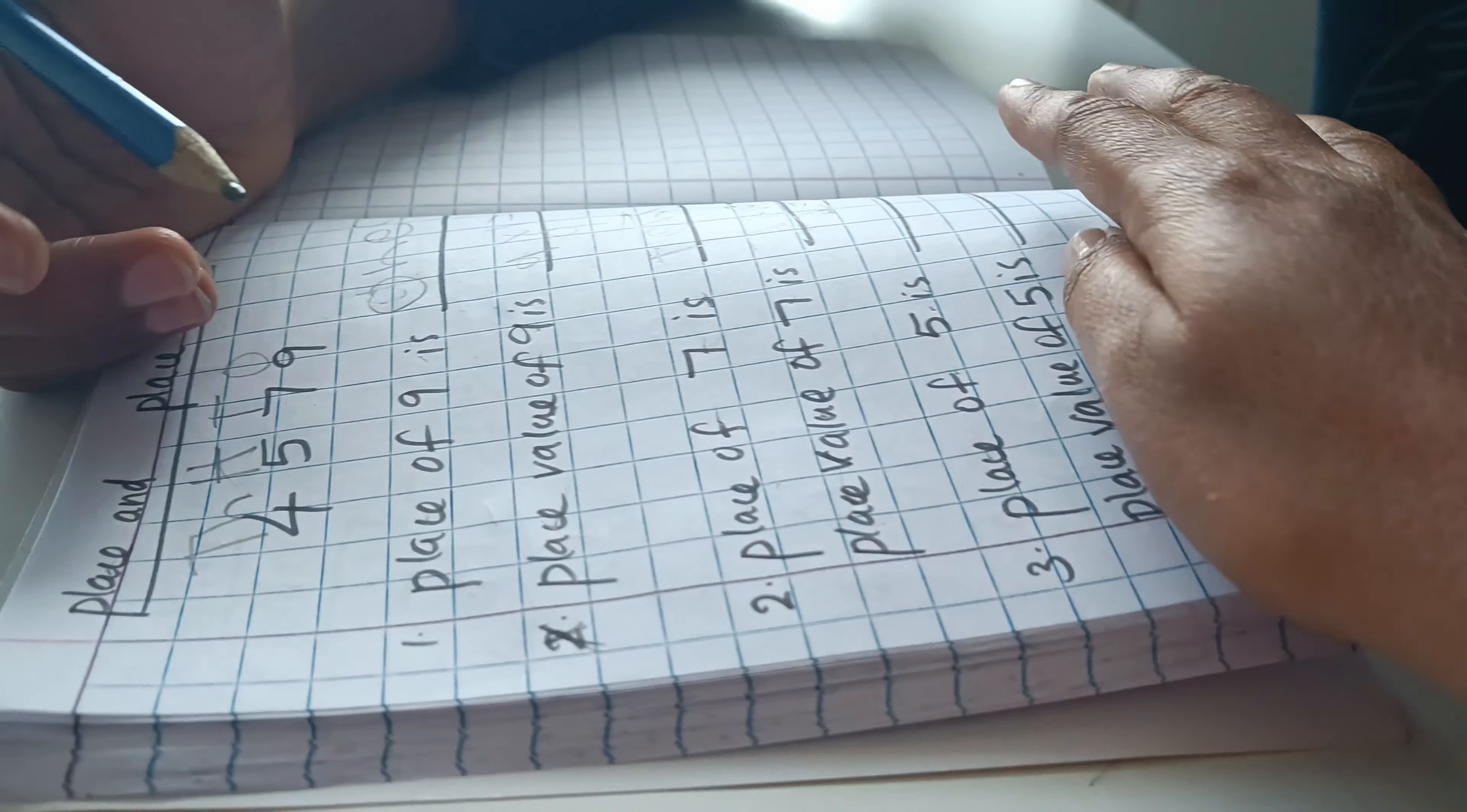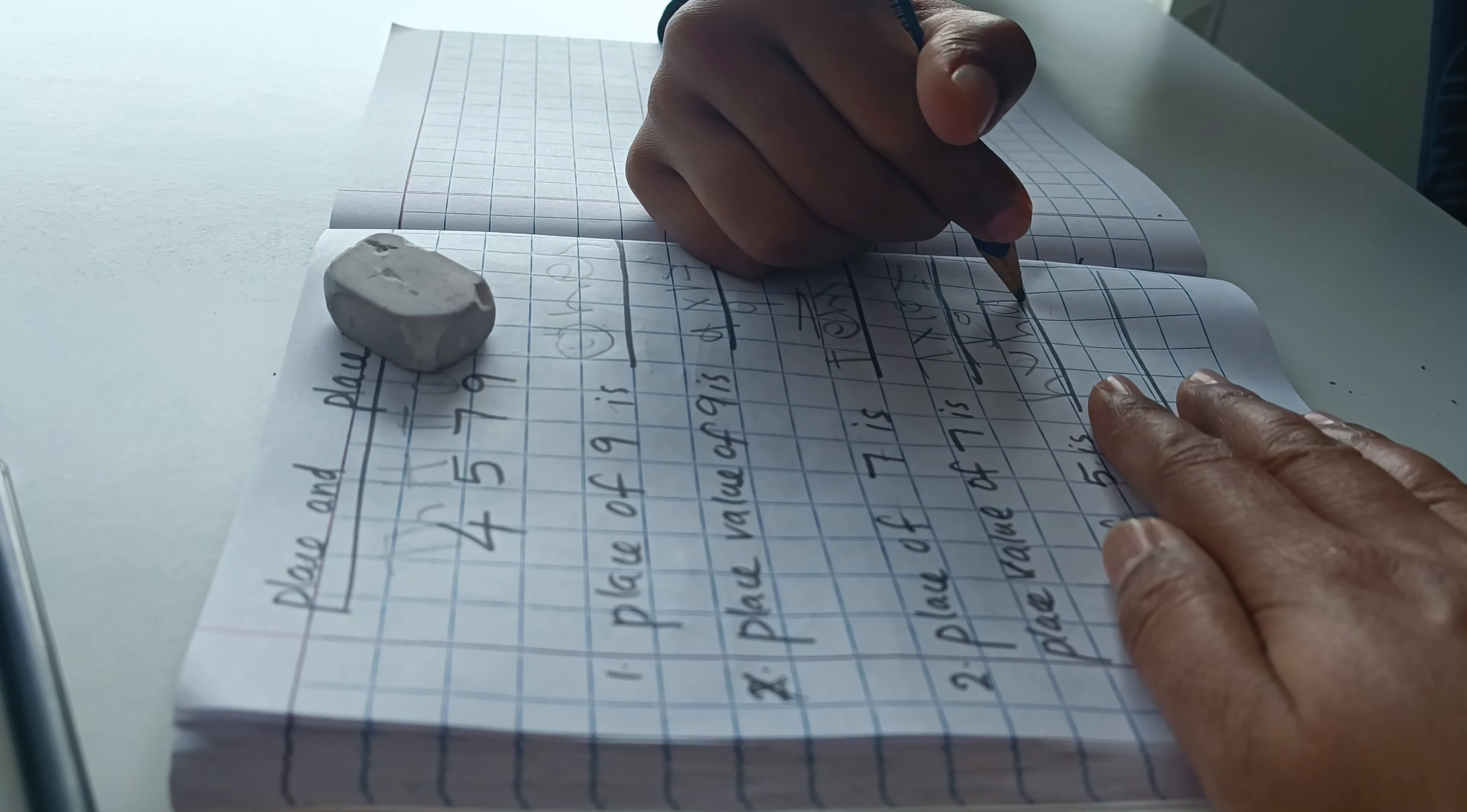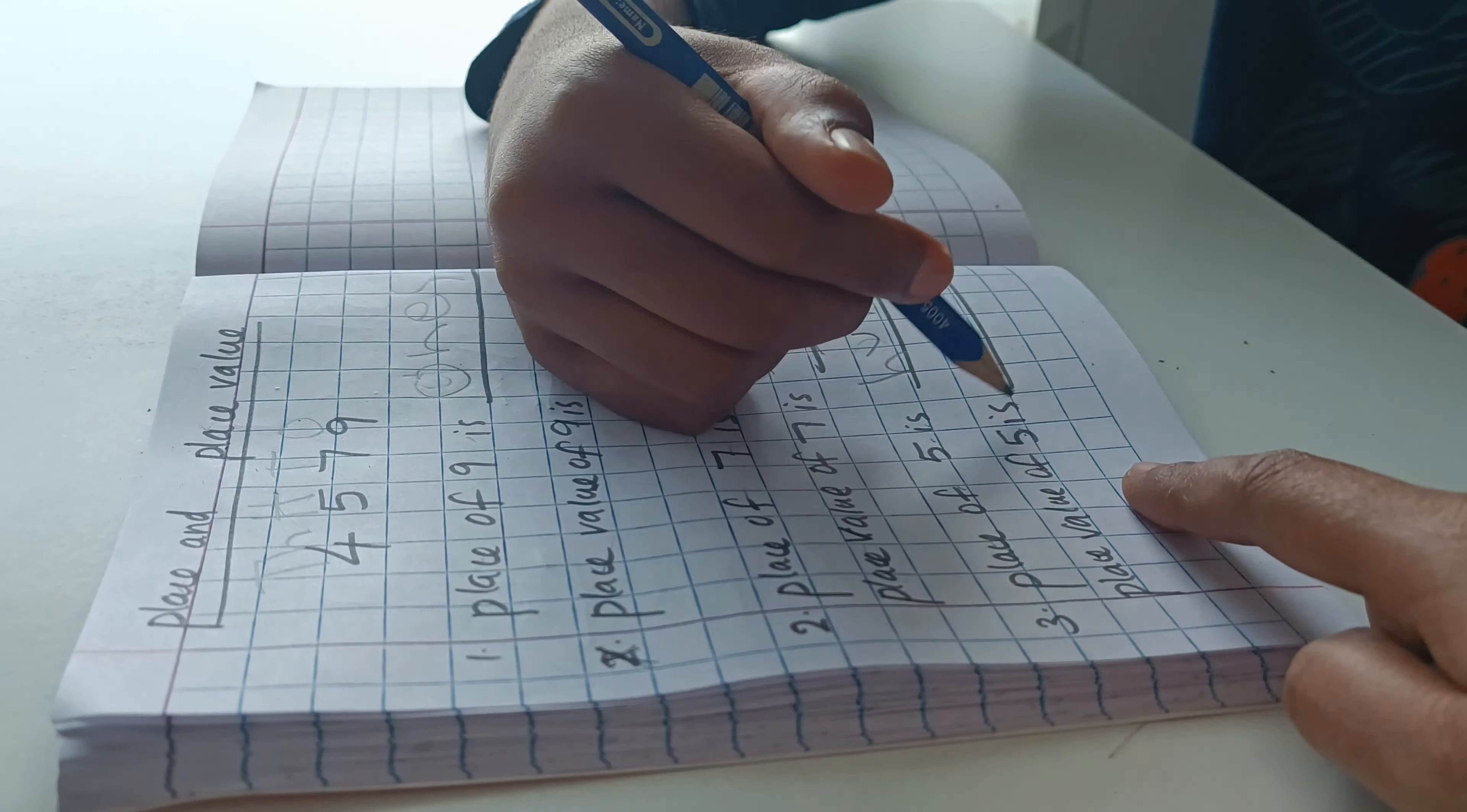That's the place of five, right? Hundreds. Hundreds, read. Five eights, read. Read. Place, place value of five eight. What's the place value of five?